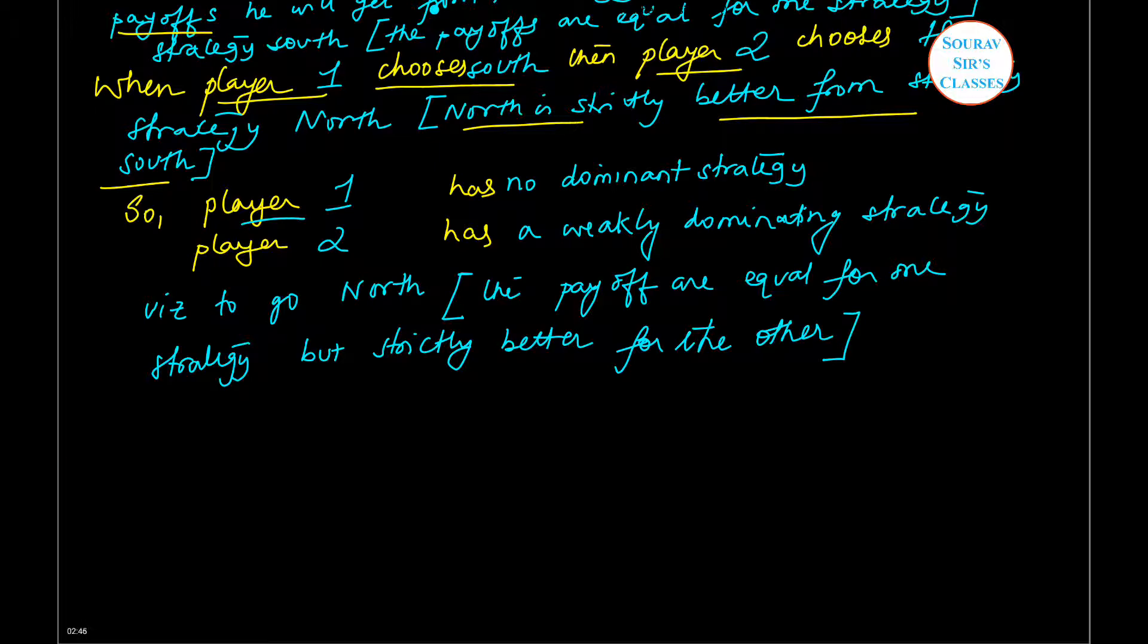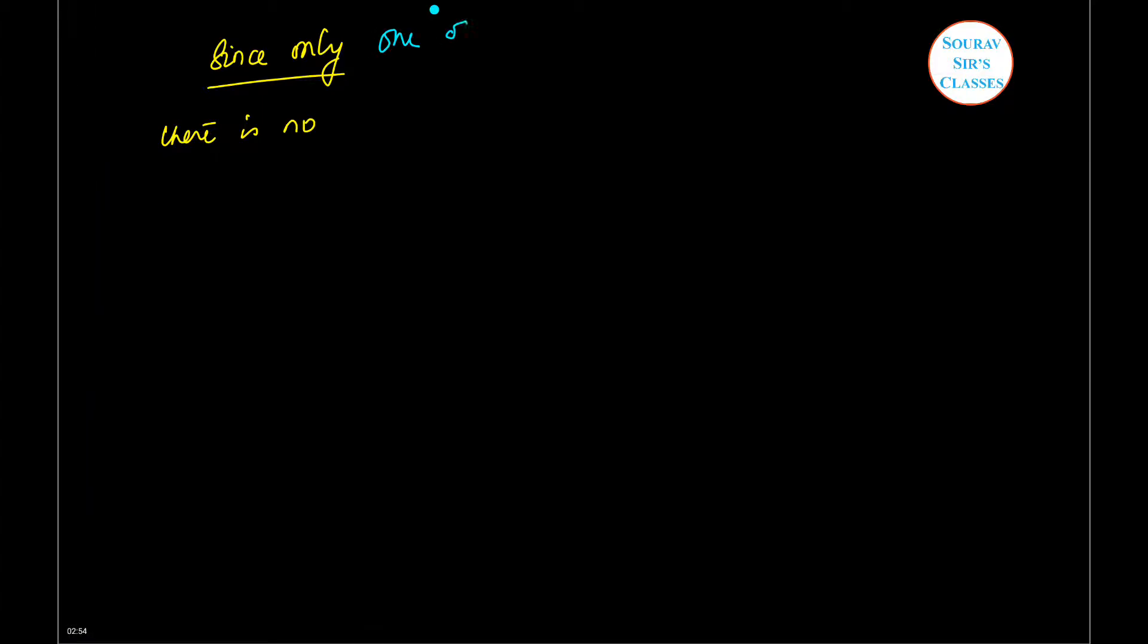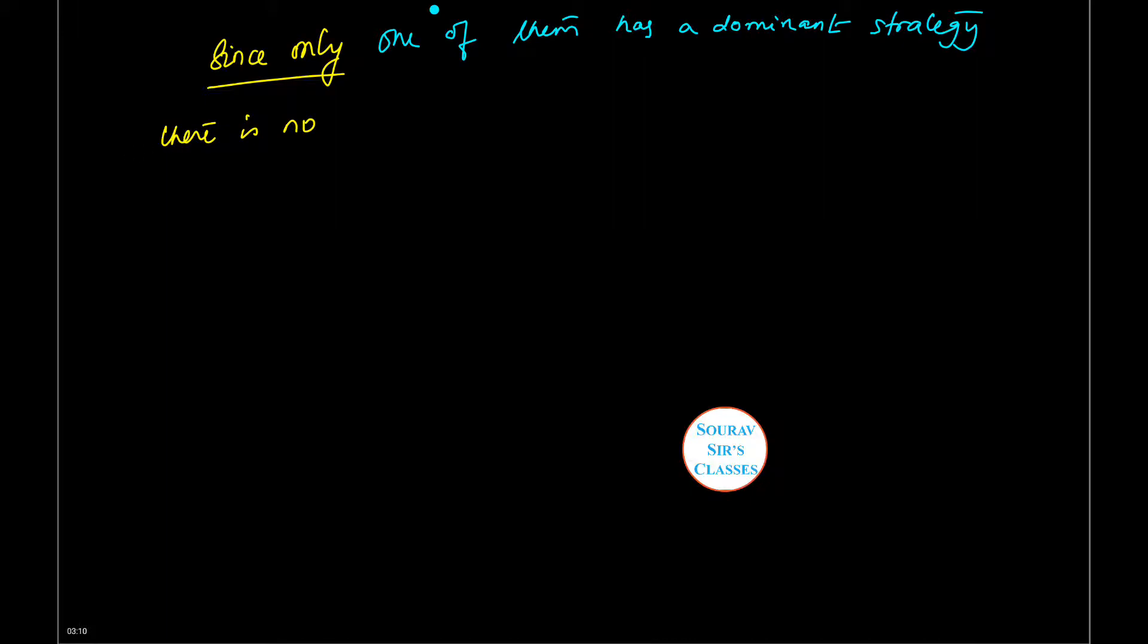So now what we see is that since only one of them has a dominant strategy, there will be no dominant strategy equilibrium.